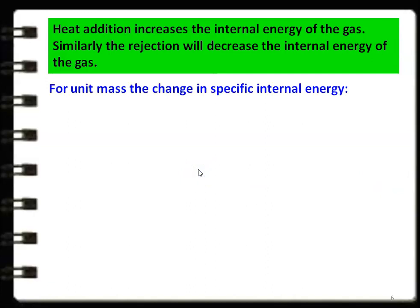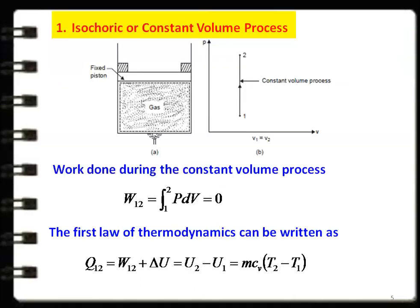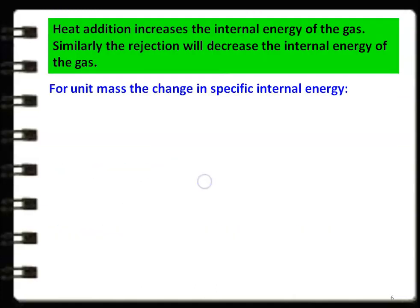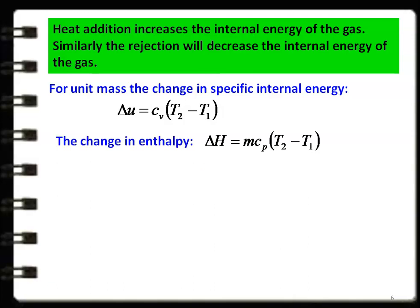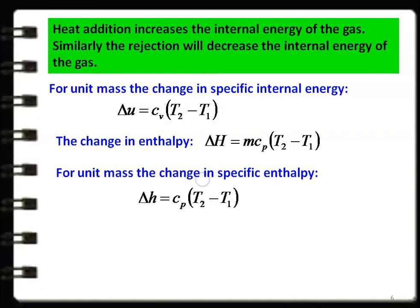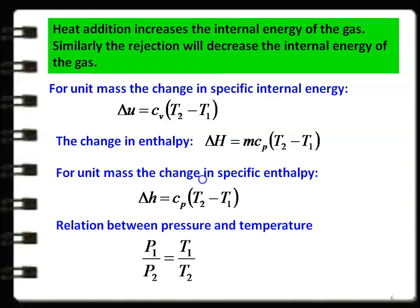For unit mass, the change in specific internal energy is Δu = cv·(T2 − T1). Change in enthalpy ΔH = m·cp·(T2 − T1), and for unit mass, Δh = cp·(T2 − T1). The relation between pressure and temperature: since volume is constant, from the perfect gas equation, P1/P2 = T1/T2.